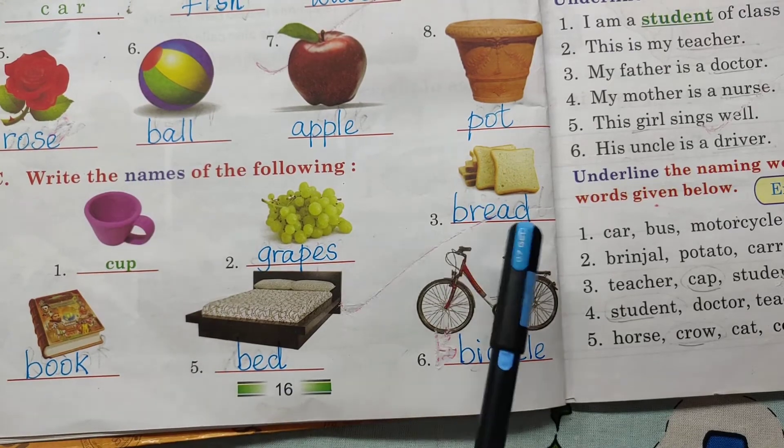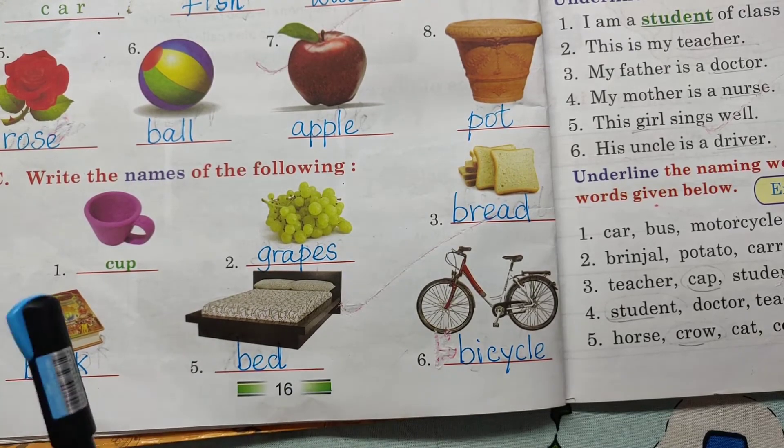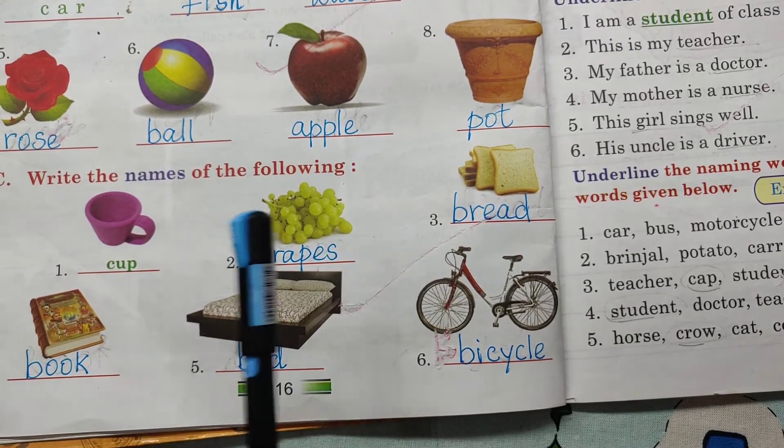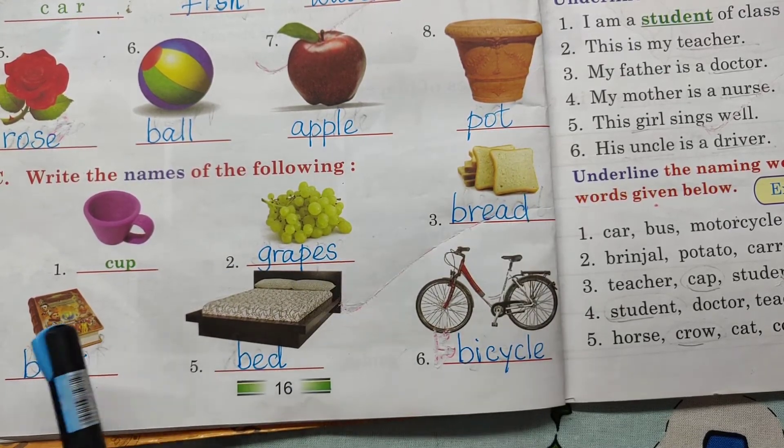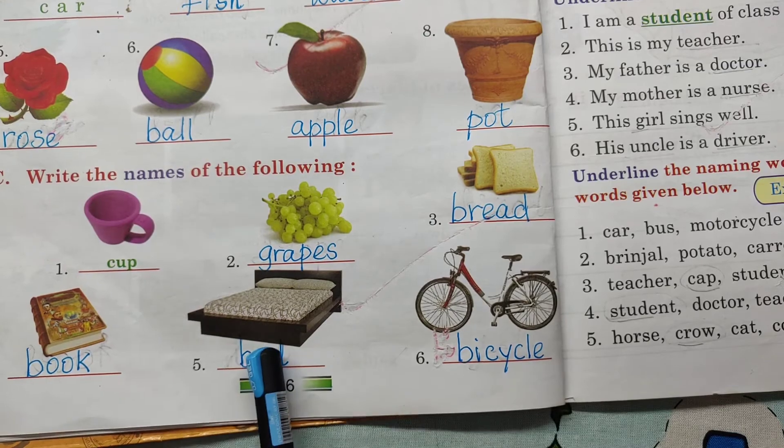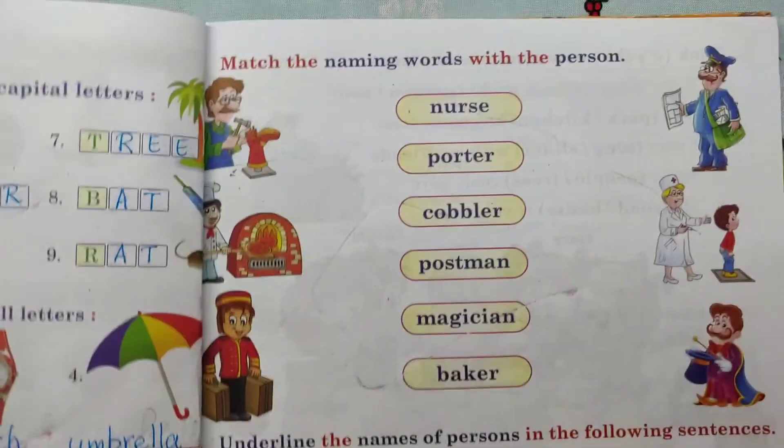Write the names of the following: Cup, Grapes, Bread, Book, Bed, Bicycle.